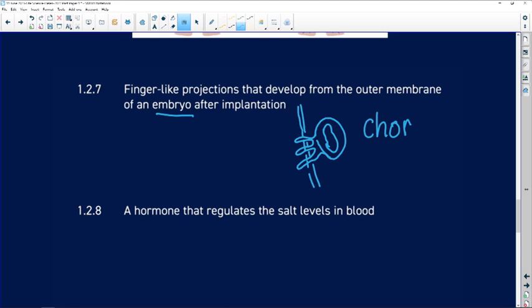They come from the chorion, so we call them chorionic and any finger-like projections are called villi. So the singular is villus, but there are many of them, so it's the chorionic villi.